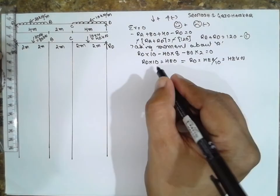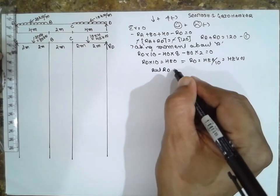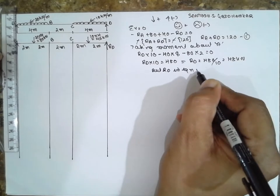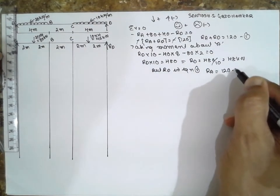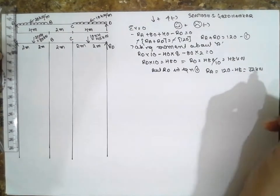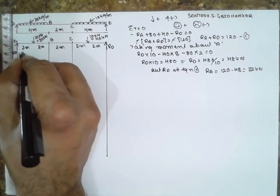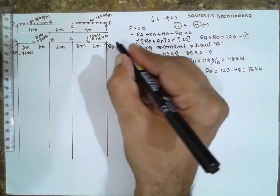Put RD value in equation 1: RA equals 120 minus 48, it will be 72 kN. RA value is 72 kN, RD will be 48 kN.